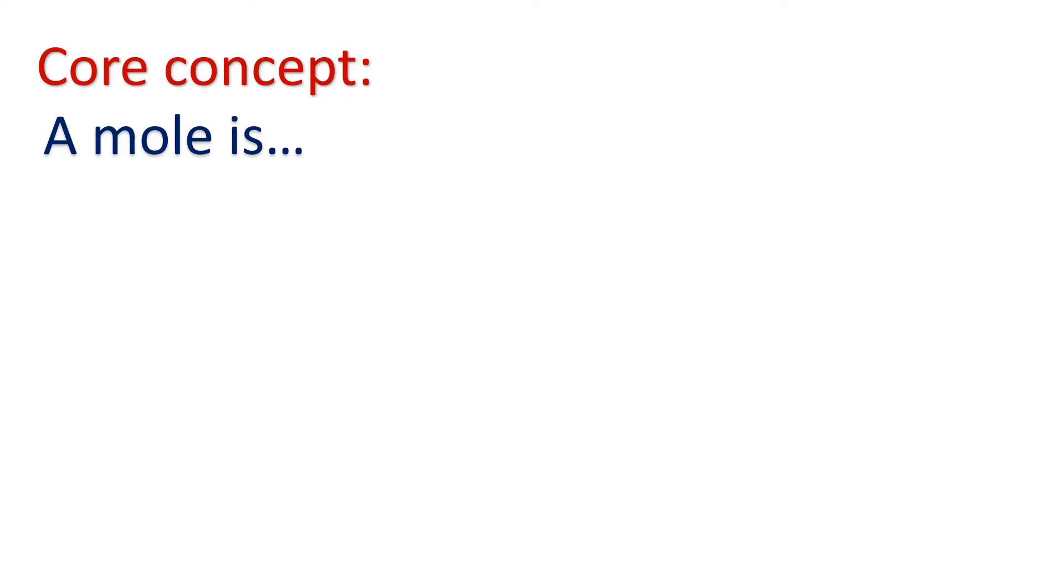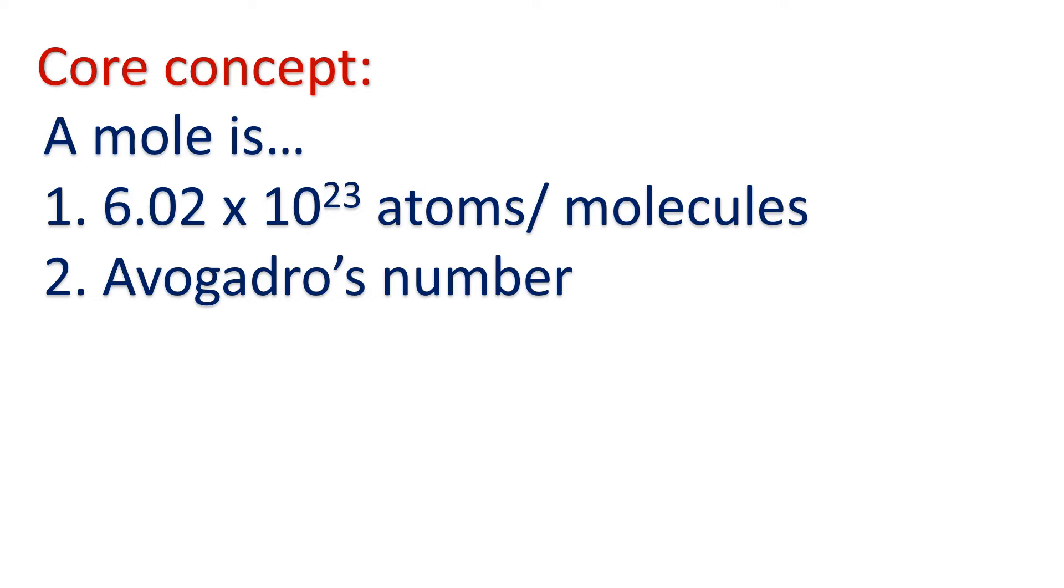So what are the core concepts we need to remember at this point? Well, what is a mole? A mole is, first of all, 6.02 times 10 to the 23 atoms or 6.02 times 10 to the 23 molecules. Second of all, a mole is Avogadro's number or Avogadro's constant. And note that number is 6.02 times 10 to 23. So let's use this core concept to answer some questions.